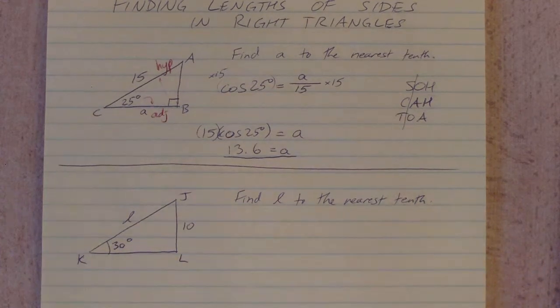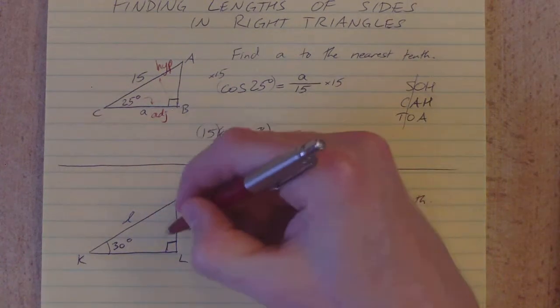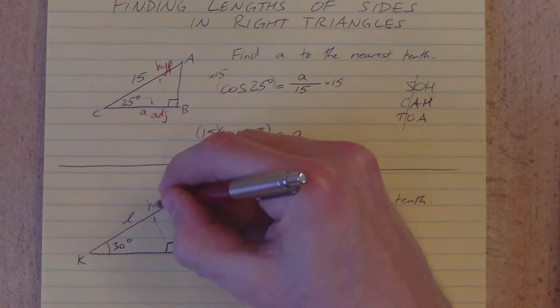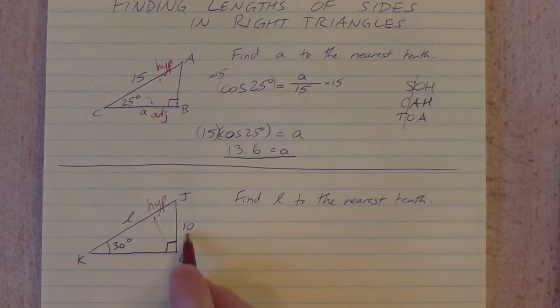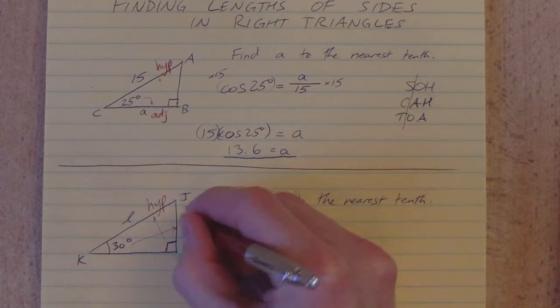So we've still got SOHCAHTOA up here. I've got this angle 30 degrees. Which sides do I know now? I do need to draw my right angle there. That would help. I've still got the hypotenuse right here. What is this 10 though?